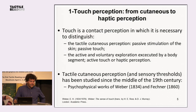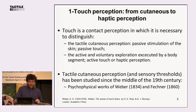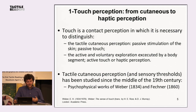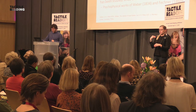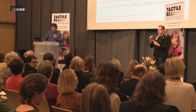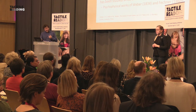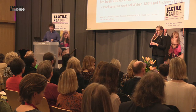In the first section, I examine touch perception. Touch is a contact perception in which we must distinguish the pure tactile cutaneous perception resulting from passive stimulation of the skin — also called passive touch — and the active voluntary exploration executed by body segments — called active touch by Gibson, or haptic perception. Tactile cutaneous perception has been studied since the middle of the 19th century through the famous psychophysical works of Weber and Fechner.